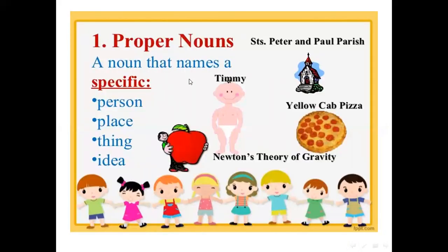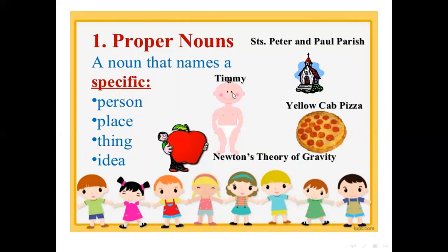Proper nouns are nouns that name a specific person, specific place, specific thing, or specific idea. For example: Newton's theory of gravity is a specific idea; Yellow Cap Pizza is a specific thing; St. Peter and Paul Parish is a specific place; and Timmy is a specific person. So nouns that name specific persons, places, things, or ideas are called proper nouns.